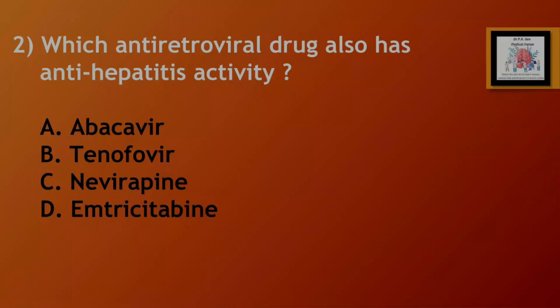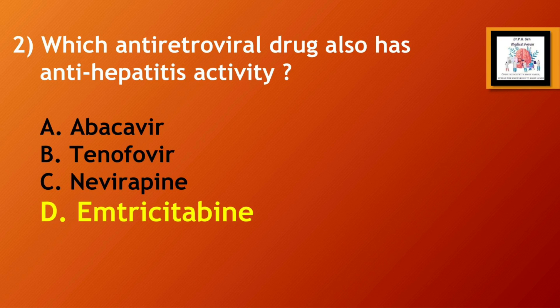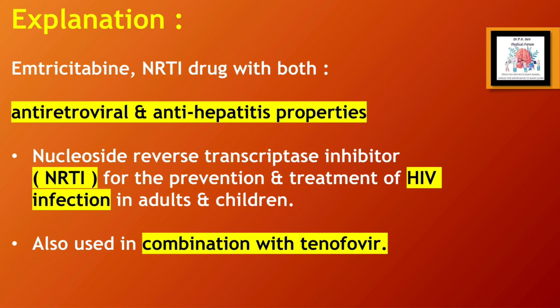Question number 2: which antiretroviral drug also has anti-hepatitis activity? Option A, abacavir; Option B, tenofovir; Option C, nevirapine; Option D, emtricitabine. The correct answer is Option D, emtricitabine. Emtricitabine is an NRTI drug — a nucleoside reverse transcriptase inhibitor — with both antiretroviral and anti-hepatitis properties. It is used for the prevention and treatment of HIV infection in adults and children, and is also used in combination with tenofovir.